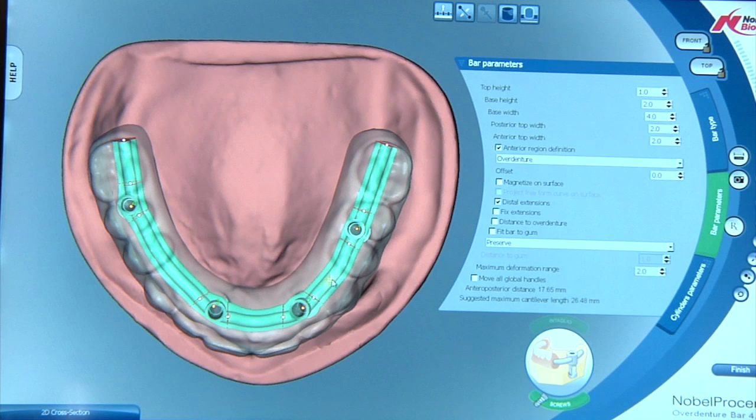As we do that, we can decide do we want to reference the denture on here? Would we like to reference what's known as an intaglio, or would we like to just go through a direct bar proposal? Let's click on our bar proposal choice and you can see that the software automatically starts setting up the alignment for you.